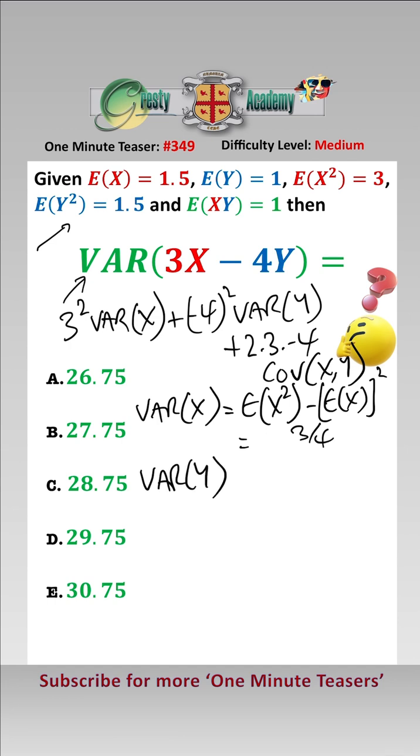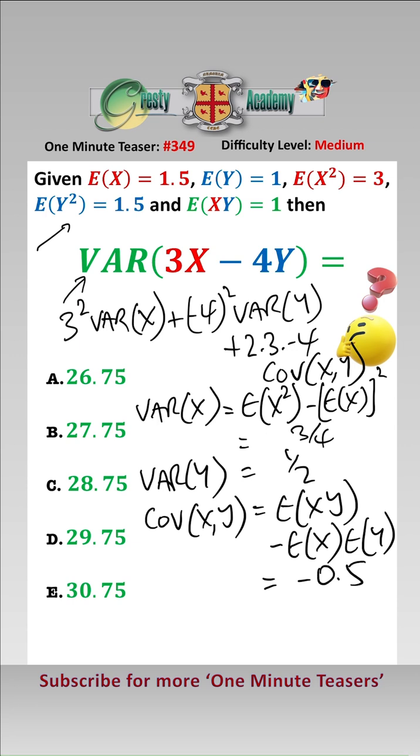The variance of y using the same formula is equal to a half, and the covariance of x and y is equal to e of xy minus e of x e of y. And that equals minus 0.5.